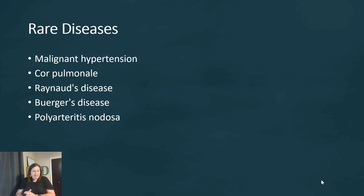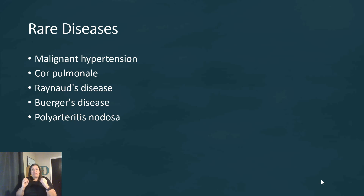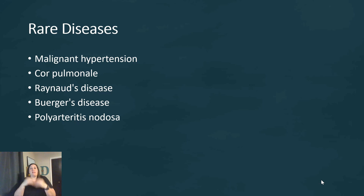Buerger's disease is an inflammatory condition that can cause clot formation, tissue atrophy, weakness, ulcers, and even gangrene. The thrombosis restricts blood flow, causing the tissues distal to the clot to become necrotic.